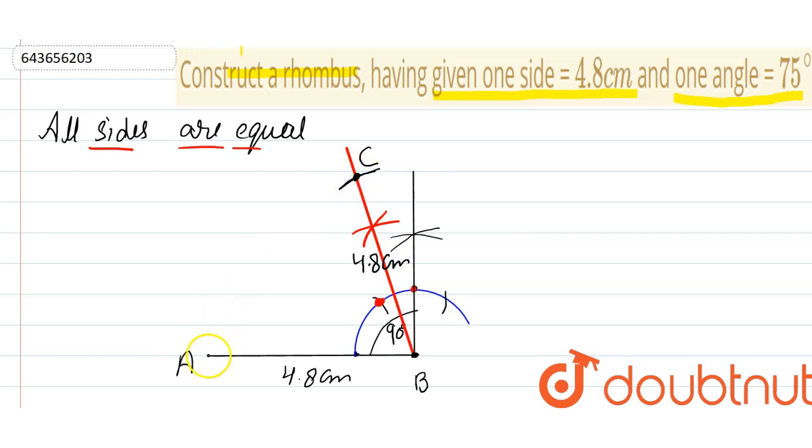Now from C point also, now from C and A, other sides are also 4.8. So just take a distance in your compass the same 4.8 and from A mark an arc here. From C also mark an arc of 4.8. And now join this point of intersection will be the fourth point of the rhombus that is D.